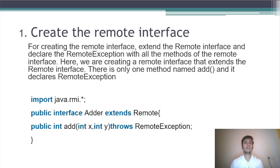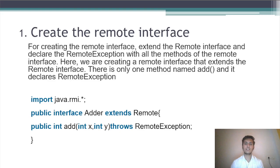Step one: create the remote interface. For creating the remote interface, extend the remote interface and declare the remote exception with all the methods of the remote interface. Here we are creating a remote interface that extends the remote interface. There is only one method named add and it declares remote exception. So this is the program. To work with RMI, we have to import the package java.rmi.*; public interface Adder extends Remote, and we created a method here named add that takes two parameters x and y.